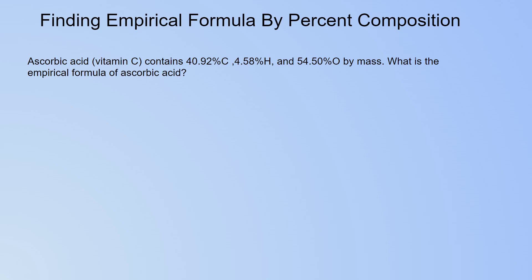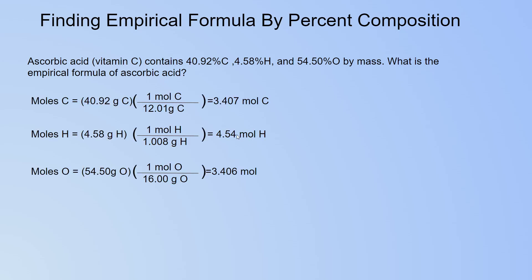The first thing you have to do is convert the percentages into grams. You can assume you have 100 grams of a substance, because that makes it very easy to work with — 40.92% converts to 40.92 grams. So you have 40.92 grams of carbon, 4.58 grams of hydrogen, and 54.50 grams of oxygen.